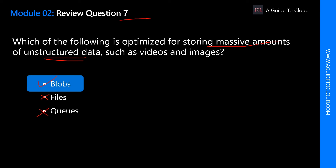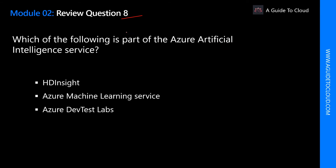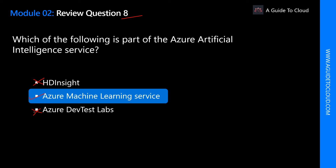Which of the following is part of an Azure artificial intelligence service? Is it HDInsight? No — that's part of Azure database services. Is it Azure Machine Learning service? Absolutely yes. Is it Azure DevTest Labs? No — that's part of Azure DevOps services. The correct answer is Azure Machine Learning service. Machine Learning service provides a cloud-based environment that you can use to develop, train, test, deploy, manage, and track machine learning models.